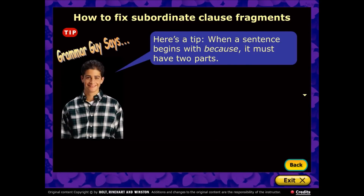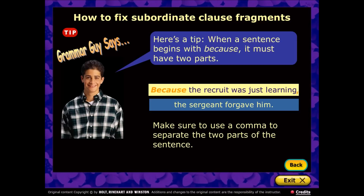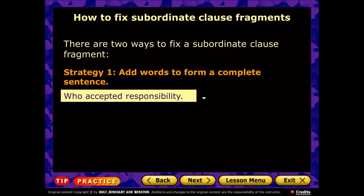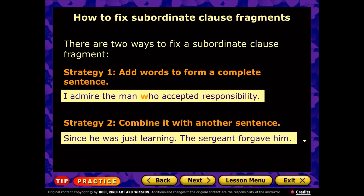As Grammar Guy showed in the previous tutorial, when a sentence begins with 'because' it must have two parts. For example: 'Because the recruit was just learning, the sergeant forgave him.' Don't end a sentence after 'because' followed by a clause without providing the independent clause that finishes it. You need a comma after the dependent clause and then the independent clause: 'Because the recruit was just learning, the sergeant forgave him.' Now we have a complete sentence.